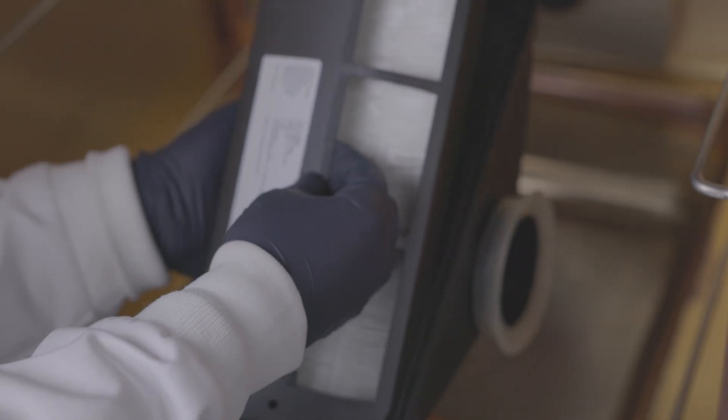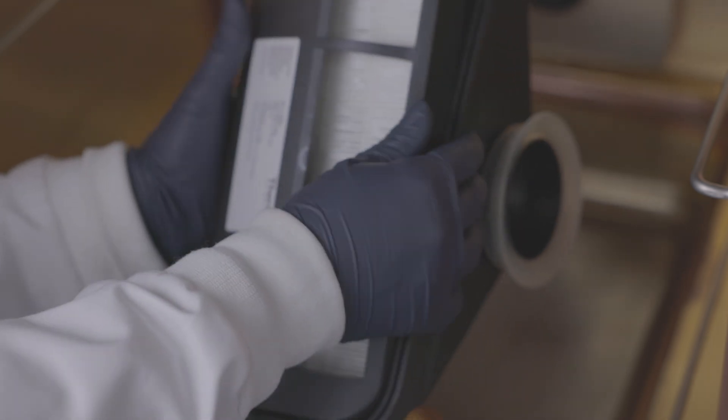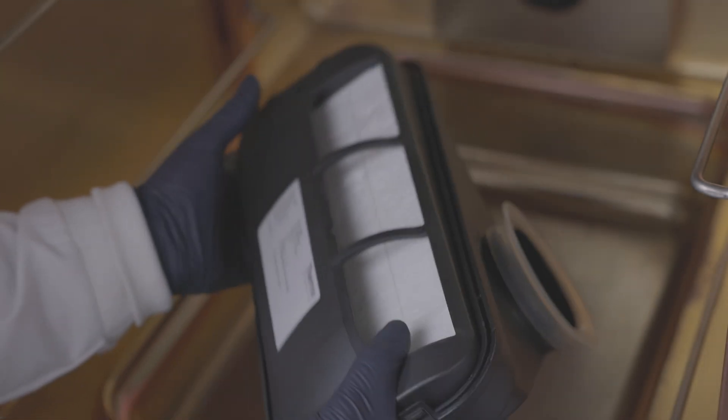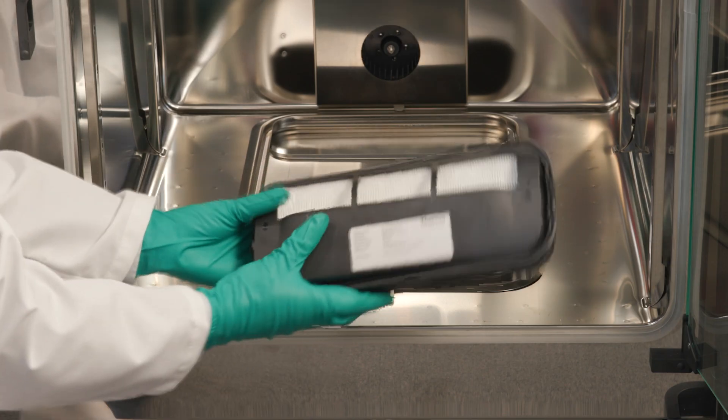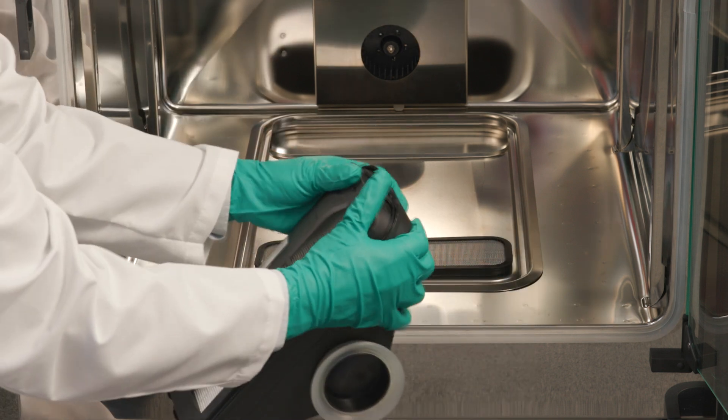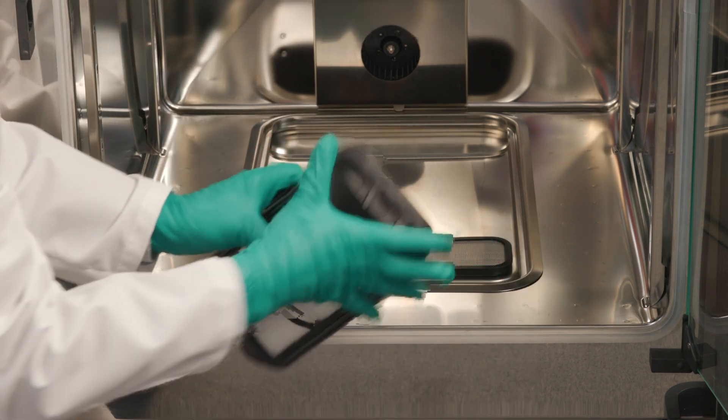Next, tilt the air box to the left and insert the tabs on the left into the corresponding slots provided in the HEPA filter. Then, insert the tabs on the right side of the air box into the HEPA filter catches.